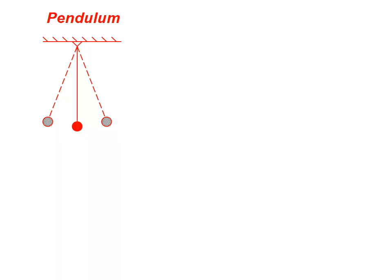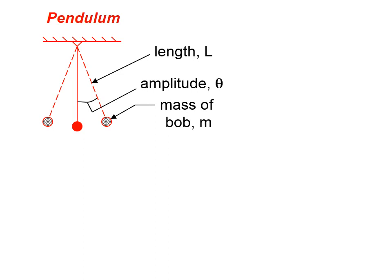So here's a diagram of a pendulum. The red colored bob shows where the pendulum is at its equilibrium position. And here we have it at its extreme left and its extreme right as the pendulum swings back and forth. The length of the pendulum is designated by the capital letter L. The amplitude of the pendulum is indicated by theta, and the mass of the bob would be m.